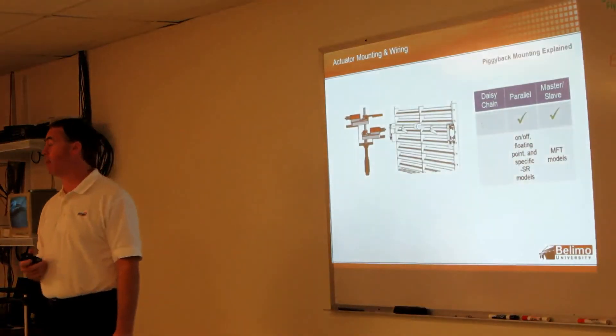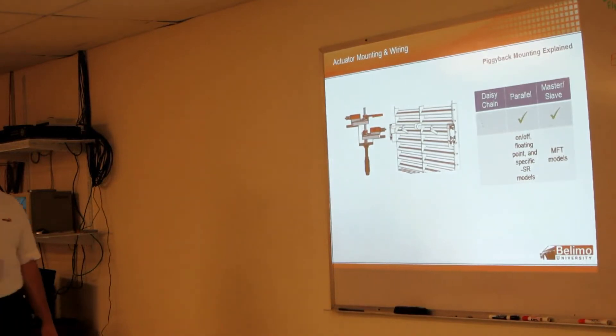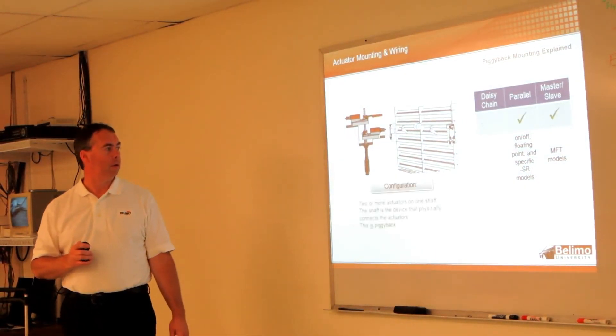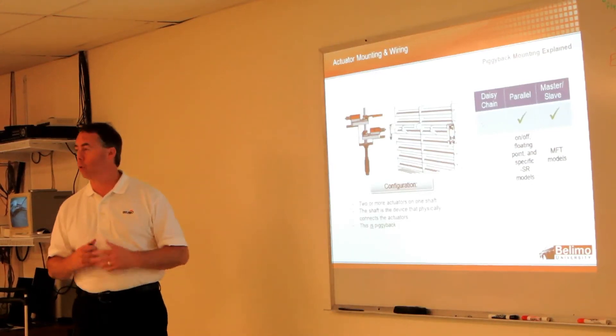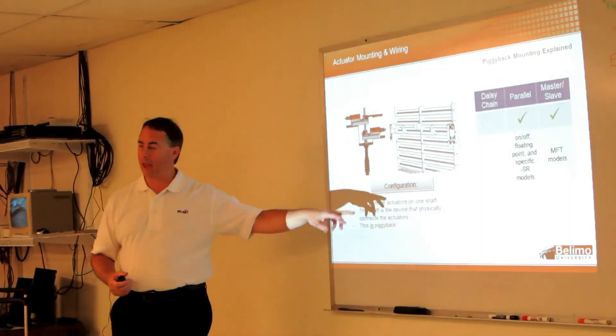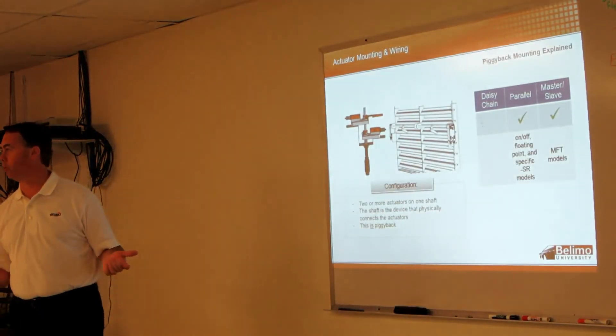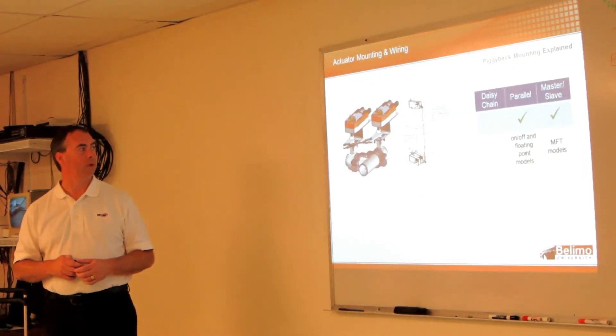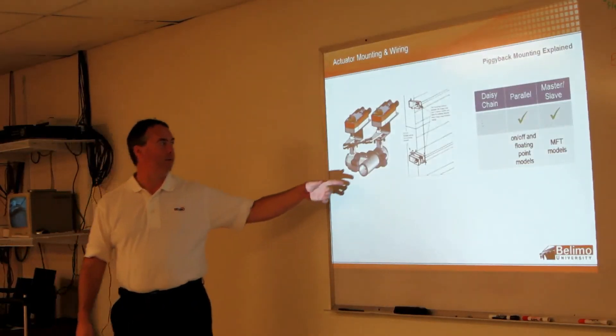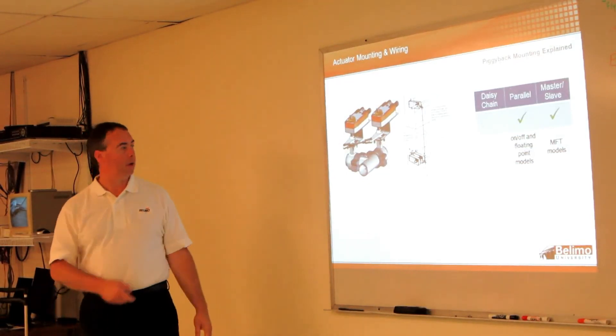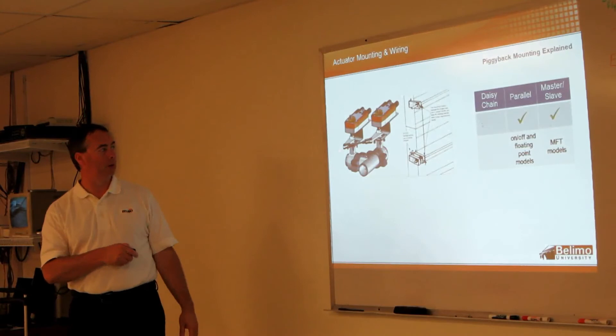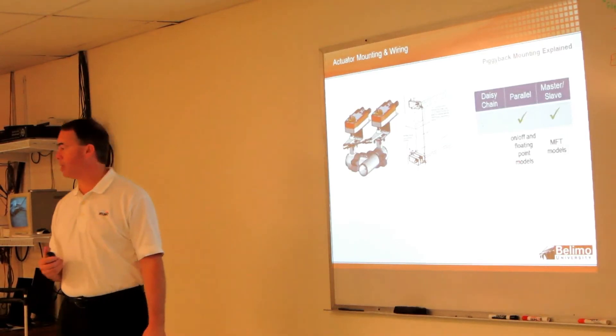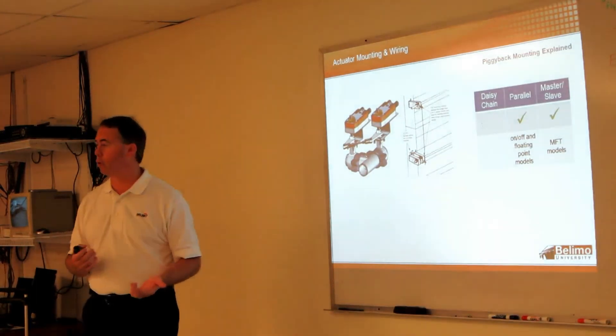We're going to want to master-slave the NFs. The rest can be wired up in parallel. Now this is the way we want to wire them if two or more of the actuators are mounted on the same shaft rather than on multiple shafts. And this is a case where, let's see, we have basically a butterfly valve set up. A three-way butterfly valve where we have a couple different actuators linked together but controlling two different shafts. And here, master-slave again, MFT models and parallel wire on-off floating point models.